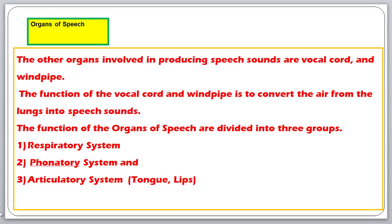The function of the vocal cord and the windpipe is to convert the air from the lungs into speech sound. The air goes into the mouth, into the windpipe, and into the lungs. The lungs then push out the air through the vocal cord and windpipe to produce speech sounds. The functions of the organs of speech are divided into three groups.